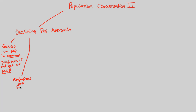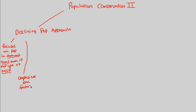This type of population approach — the declining population approach — emphasizes environmental factors. Now that we understand that, let's look at a basic example. A good way to understand this approach is to look at a good example.